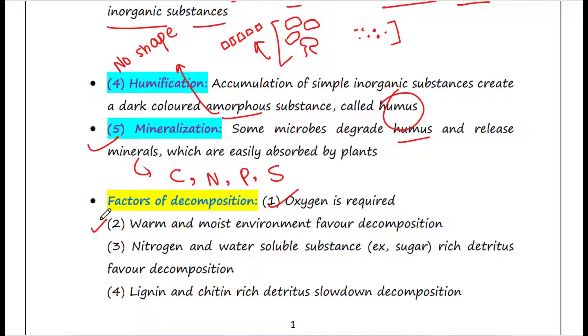Next is some substances which are water-soluble like sugar, and substances which are composed of nitrogen materials, are easily broken down. So nitrogen and water-soluble substances rich detritus favor decomposition. And lignin and chitin rich detritus slow down decomposition. Substances which are rich in lignin and chitin are not very easily decomposed, so they take time.